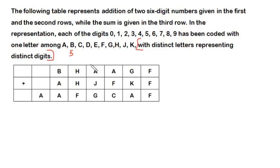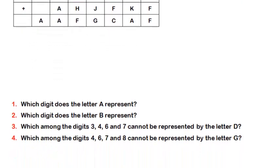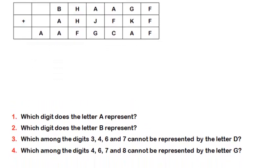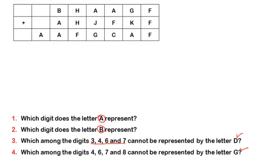Looking at the questions gives us a hint about what we need to find. We need to find the digit represented by letter A, the digit represented by letter B, and something about letters D and J — specifically which digit D and J are not representing. The questions hint at what we should focus on, so let us focus on A.